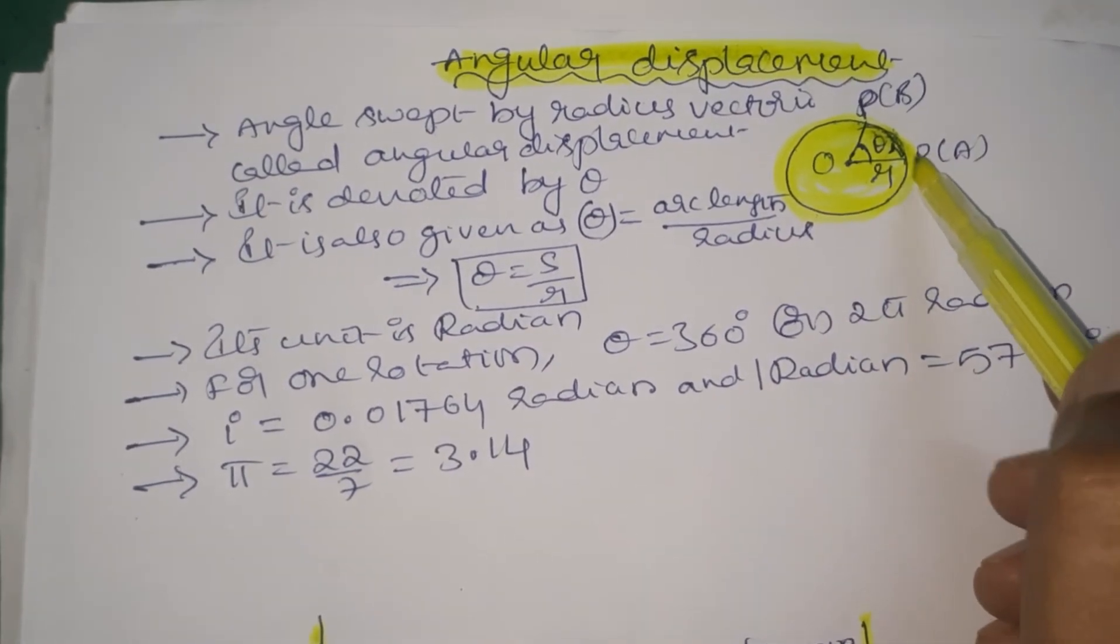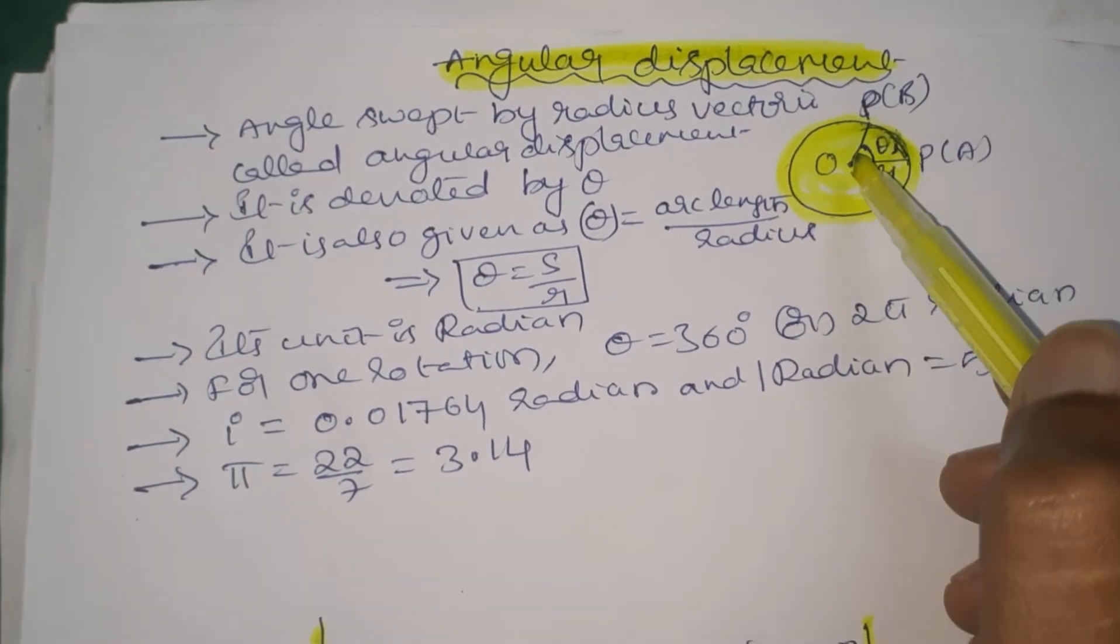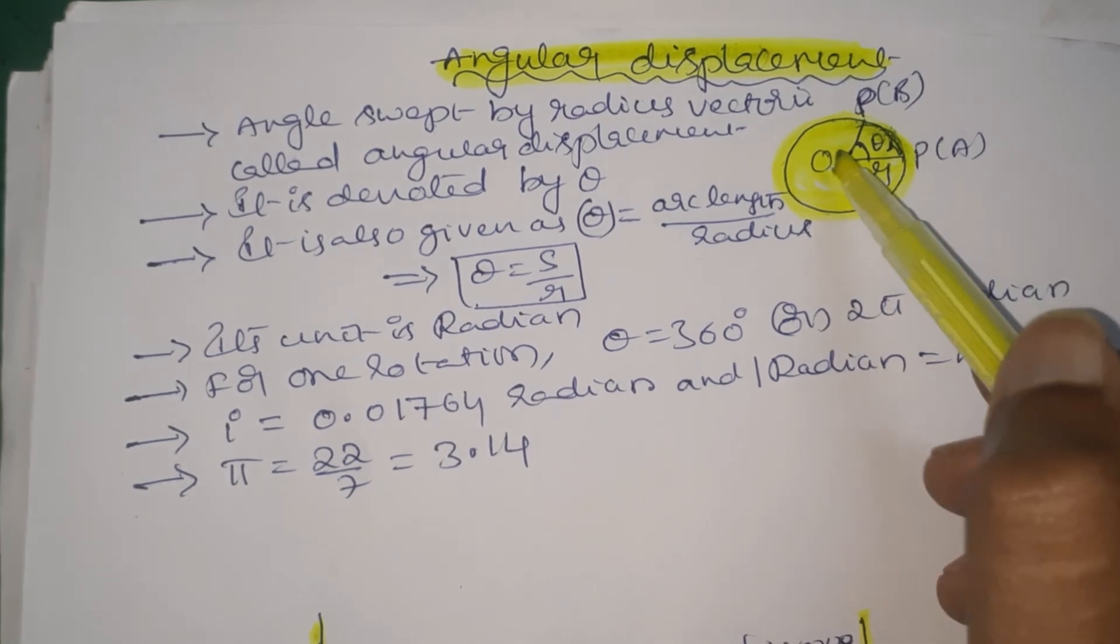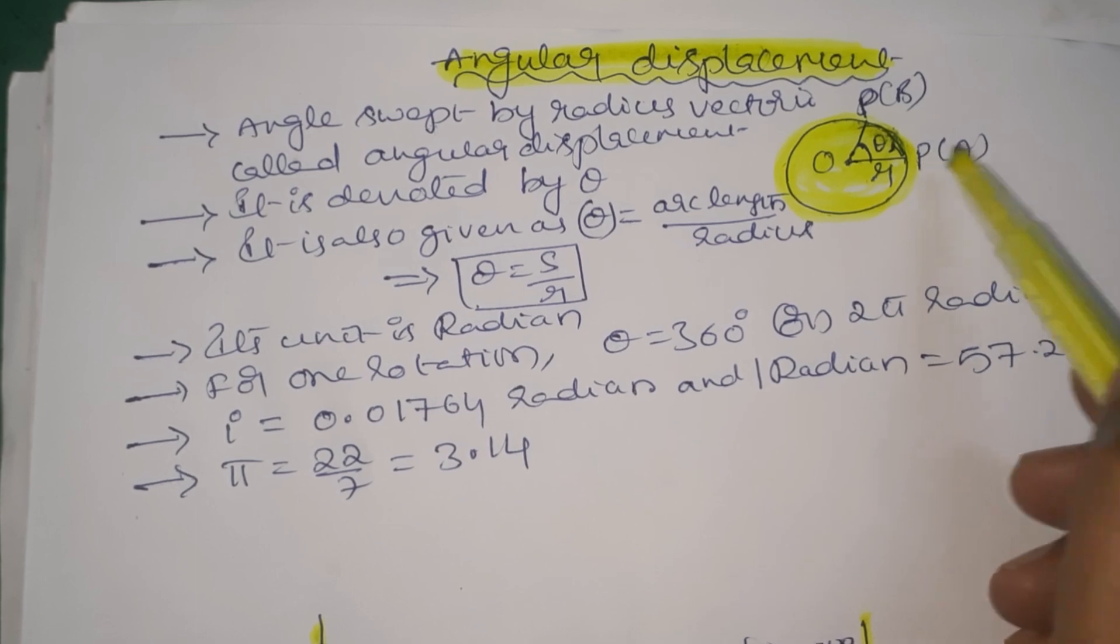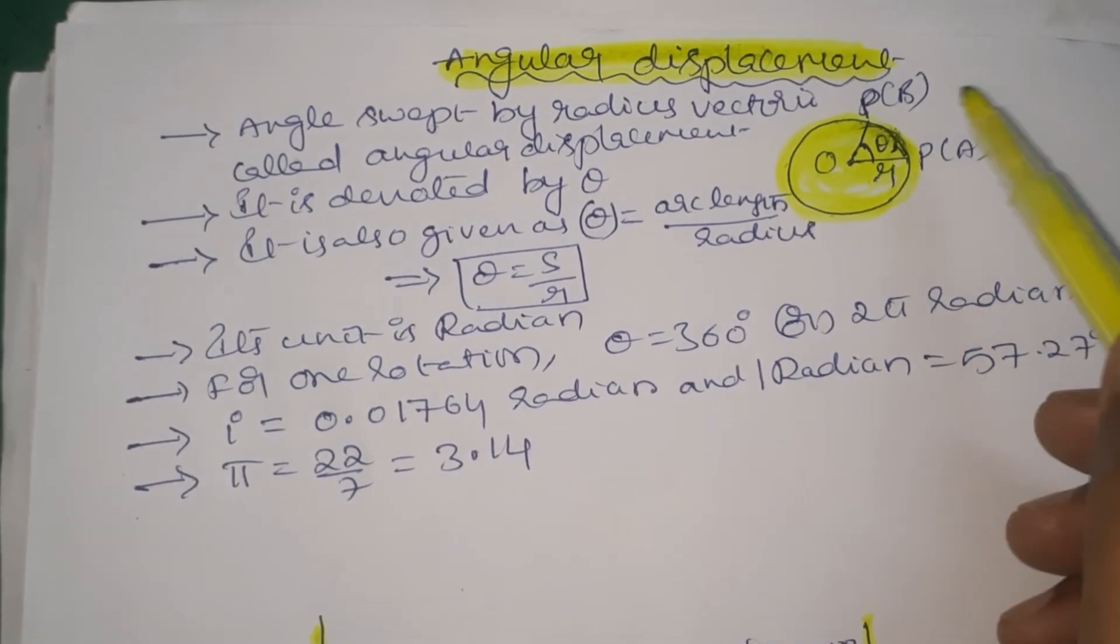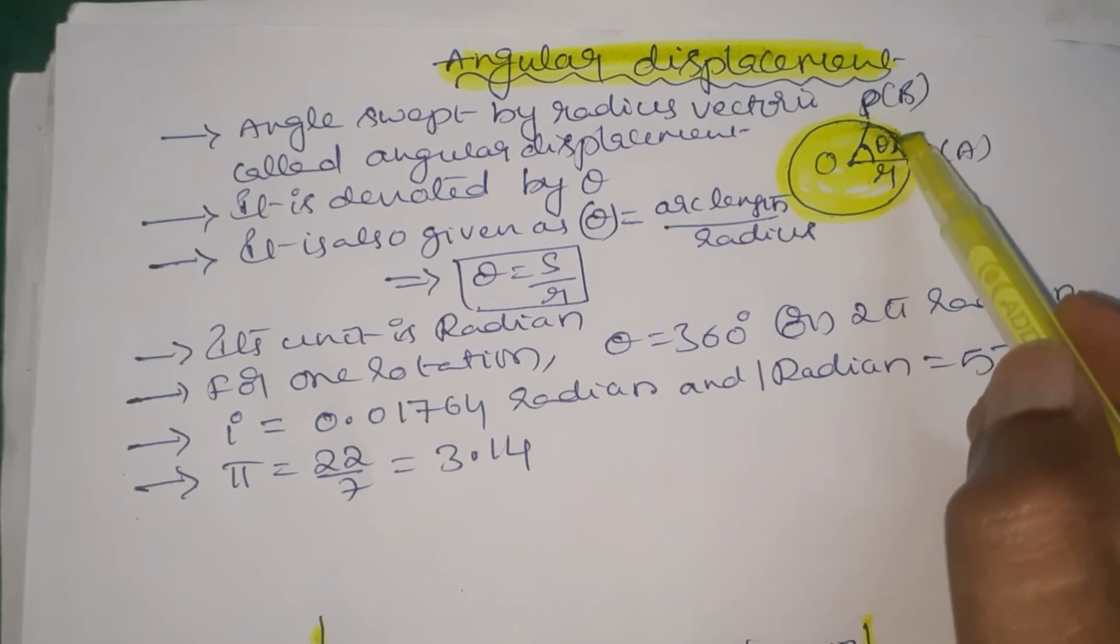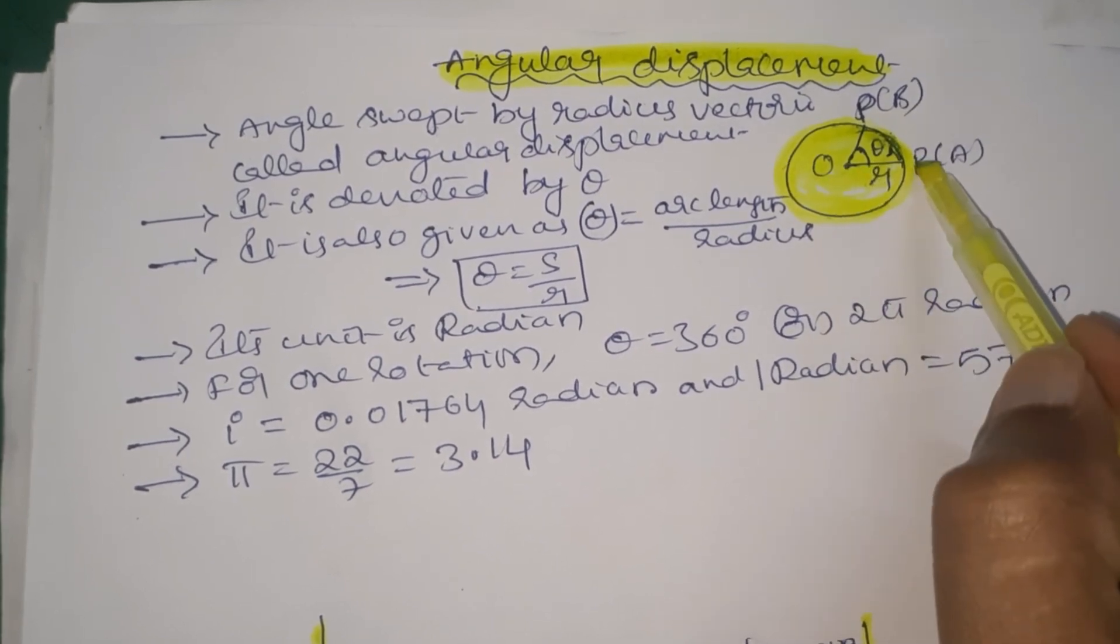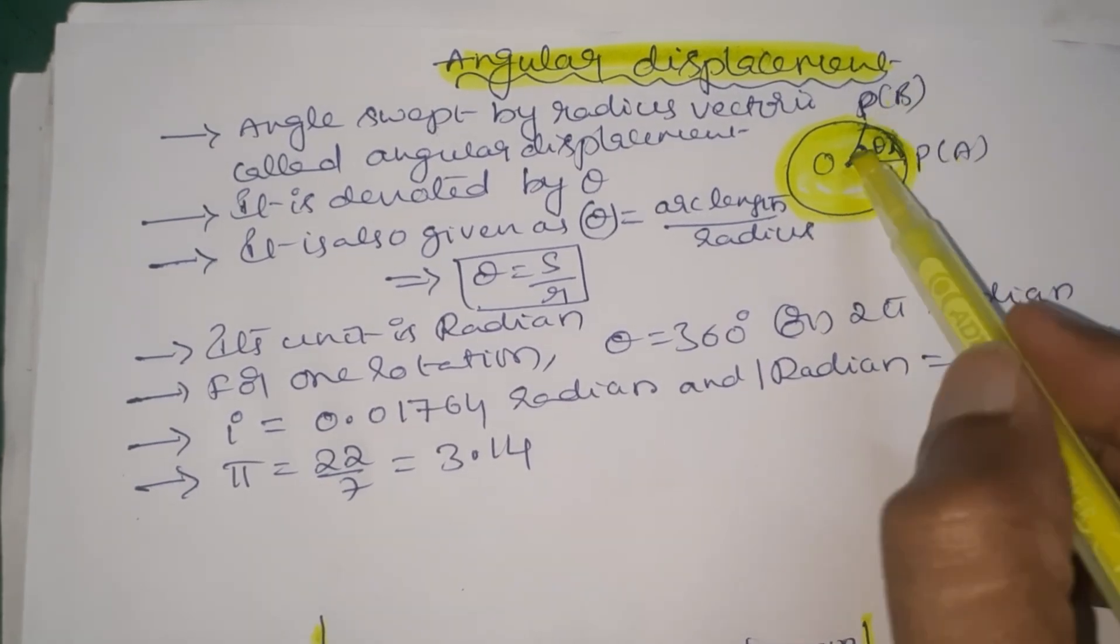Consider P is a particle moving along the circumference of a circle with center O. The radius and radius vector from O to P - initially the particle is at point A. After a time interval, it moves to point B. The angular displacement is from the initial position vector OA to the final position vector OB.